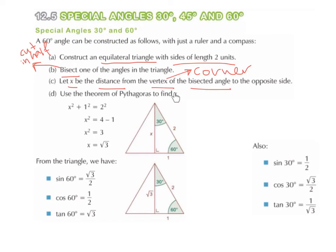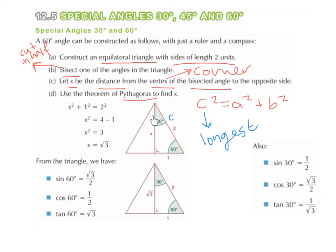Part D: Use the theorem of Pythagoras to find x. Pythagoras' theorem is c squared equals a squared plus b squared, where c represents the longest side. In this right-angled triangle, 2 is the hypotenuse, so c equals 2, a equals x, and b equals 1. Substituting: 2 squared equals x squared plus 1 squared. So 4 equals x squared plus 1, giving x squared equals 3, therefore x equals the square root of 3.